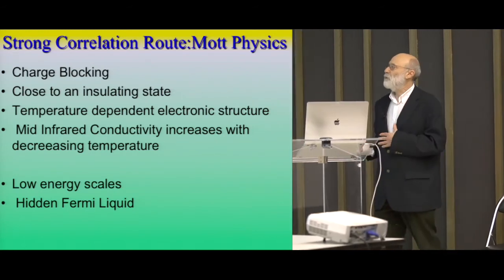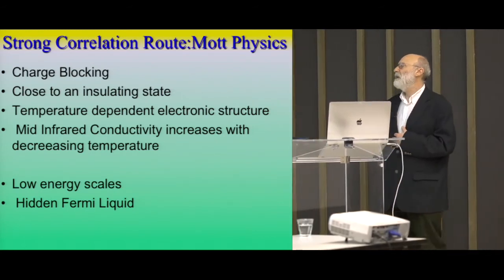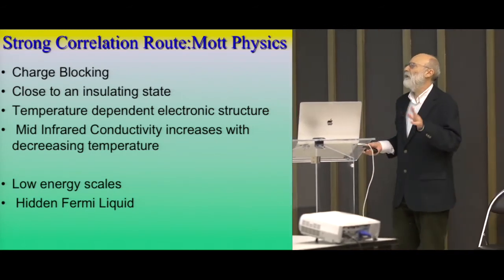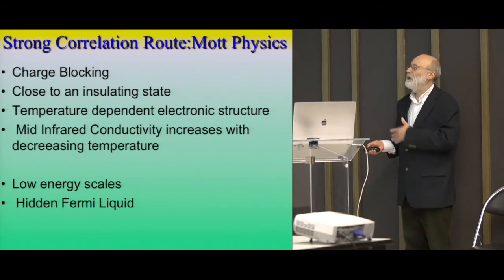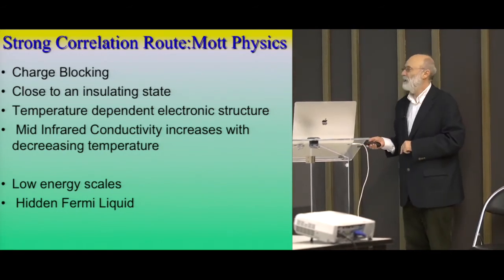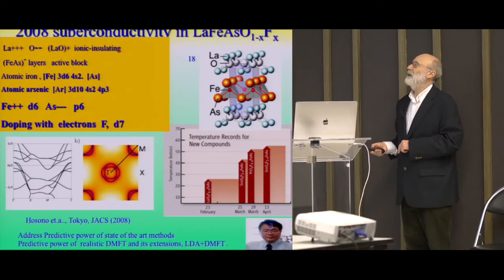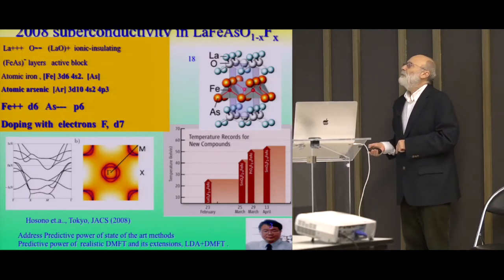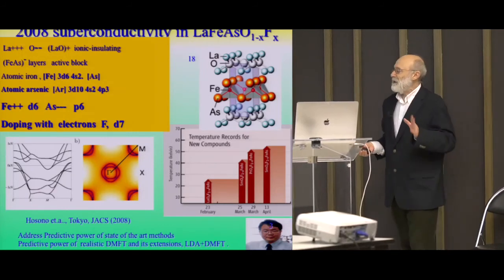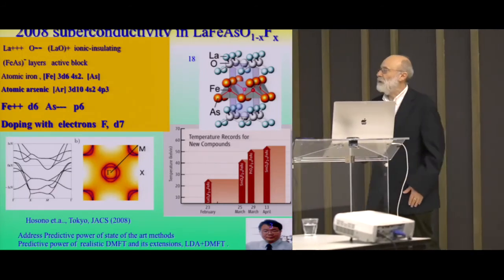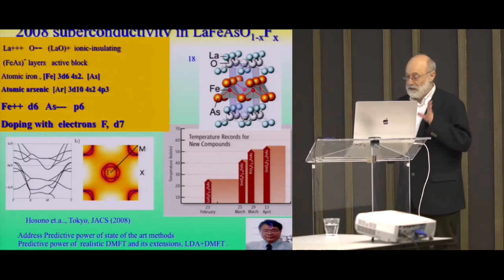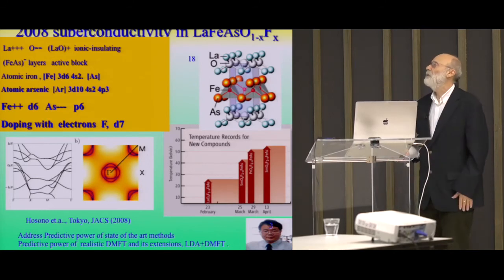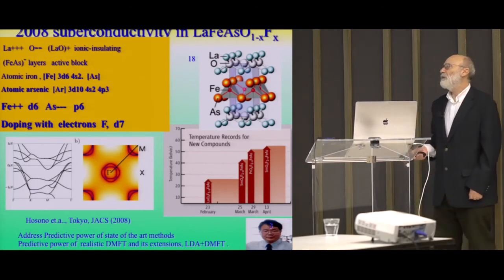I would say we sort of understand the essence of Mott physics: it's charge blocking, it's close to an insulating state, it gives rise to temperature-dependent electronic structure visible in the conductivity, and it leads to low energy scales. But I believe this is not the main road for strong correlations — it's one road, but there are others.